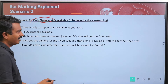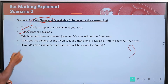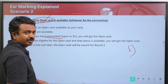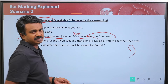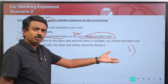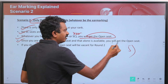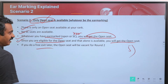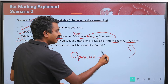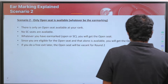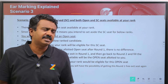Scenario 2: Only an open seat is available at my 5th choice — LTM Pediatrics. Whatever you have earmarked — open or reserved — it doesn't matter. You will get the open seat because that's all that's available. If you do a free exit later, that seat will still be an open seat in the next round, available for all candidates. You cannot change it to an SC seat.